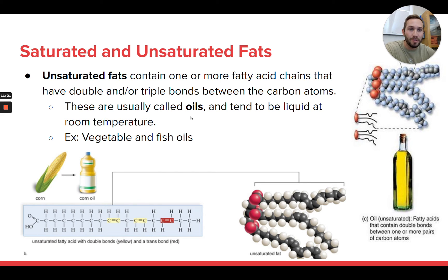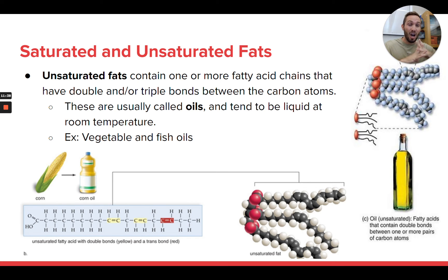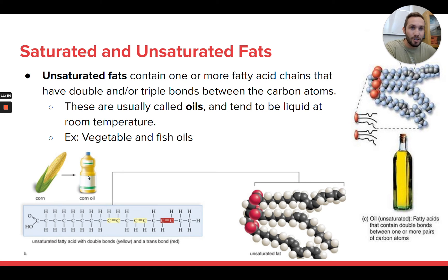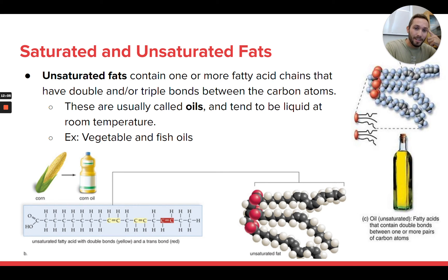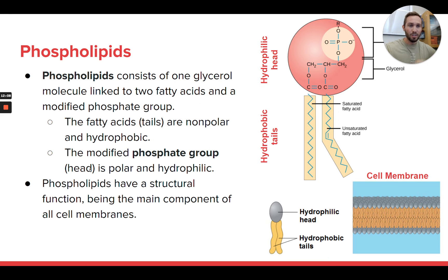Usually unsaturated fats are what we call oils — when you hear the word oil, it's basically referring to liquid fat. It's still fat, it's just liquid. This type of fat is usually made in plants, so plants are usually making a lot more unsaturated fat. Vegetable oil is almost pure unsaturated fat. You can look at vegetable oil, avocado oil, or olive oil — any oil from a plant — and it's going to have a lot of unsaturated fats. So that's the difference between saturated and unsaturated. Those are triglycerides — fats and oils — and they store energy.